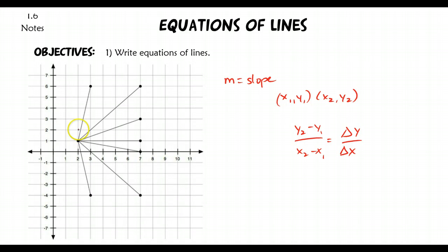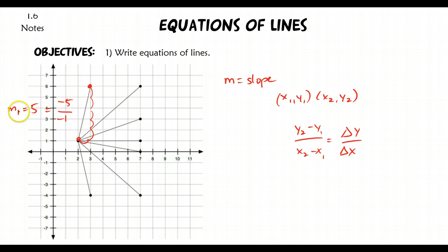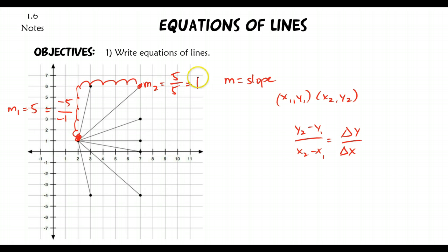You could use this formula every time, but if it's already in a coordinate system, you can also count boxes. If I were to count the slope from here to here, I'm going down 1, 2, 3, 4, 5 — so down 5 and left 1 — giving an overall slope of positive 5 for M sub 1. For M sub 2, going from this point to this point, I'm going up 5 and right 1, 2, 3, 4, 5 for an overall slope of positive 1.